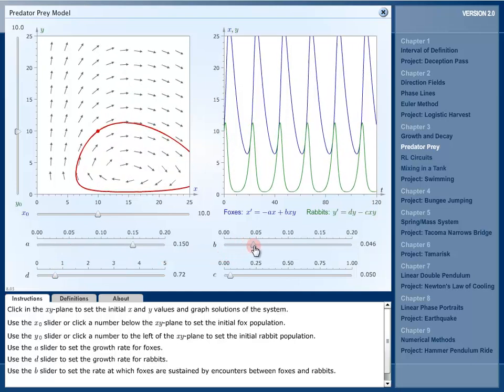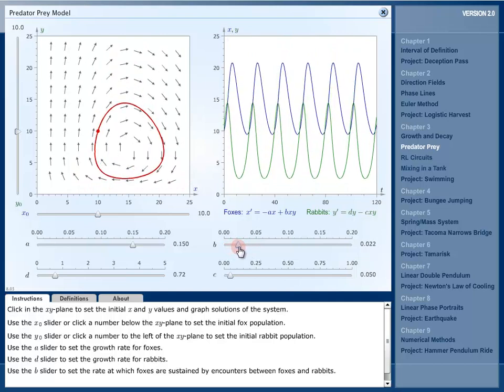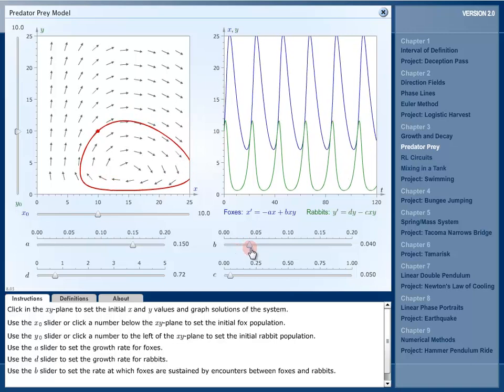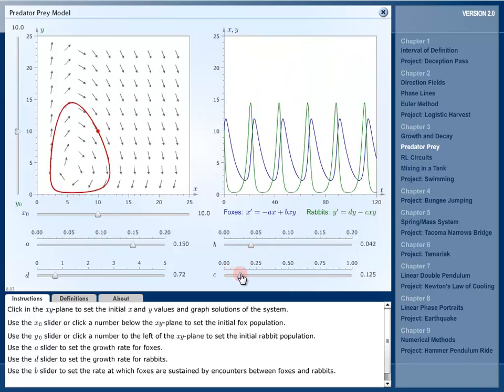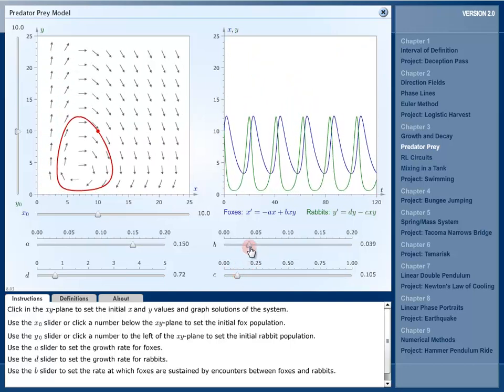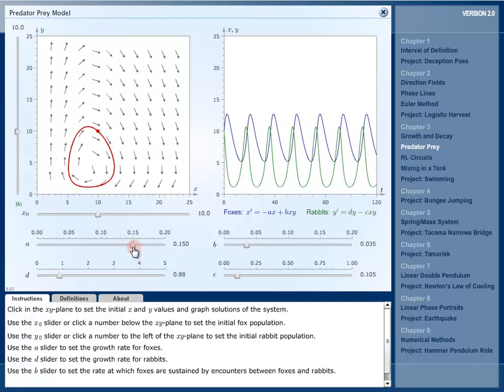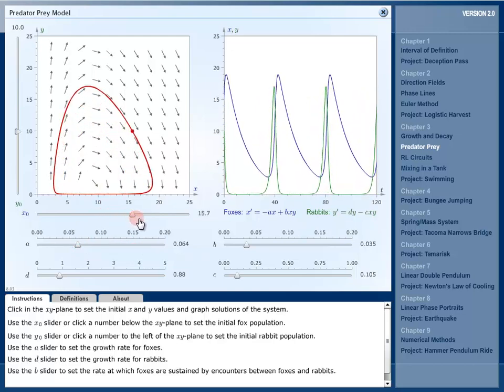I can adjust B, which means the higher B is, the better it is for the foxes when there are interactions. The higher C is, the worse it is for the rabbits. So you can see the adjustments and what effect it has on there. Some of the questions on your homework will ask you to set specific values for these and also change the initial conditions.